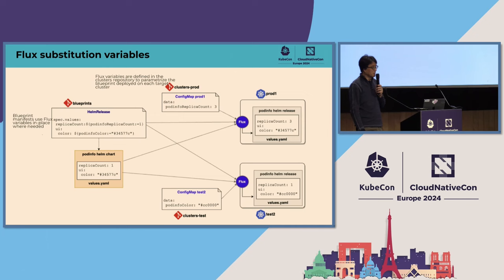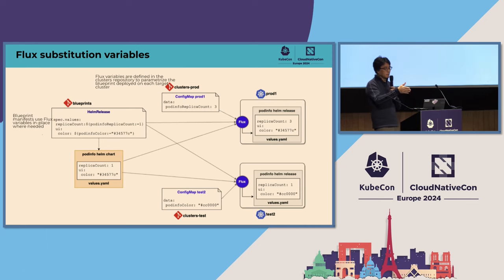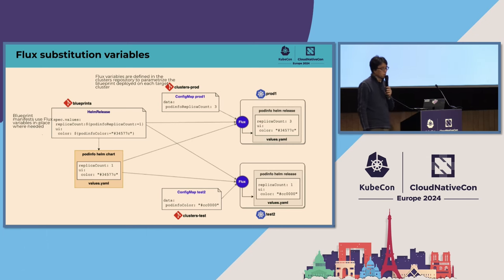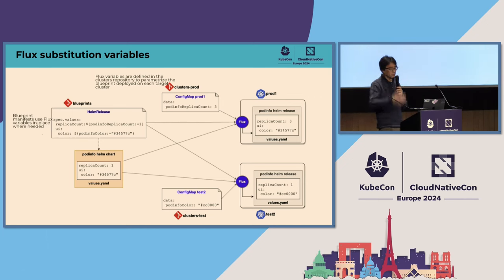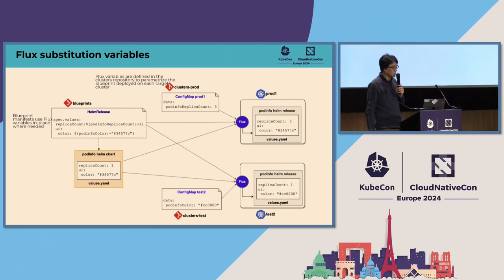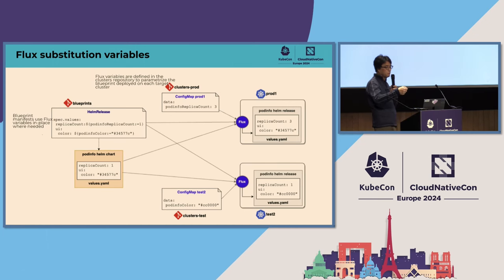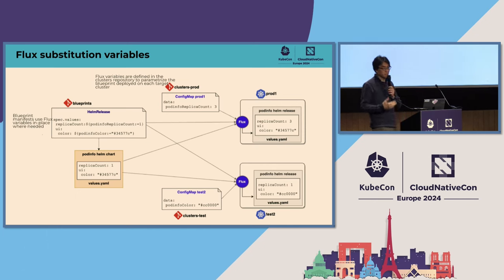On the clusters Git repo side, that's where you define the value to use for each cluster for each variable, and these come in the form of a config map. For a production cluster, for example, you want to override the number of replicas from default to three. In a test cluster, you might change the color attribute of the Helm chart. When you bootstrap Flux on these clusters, Flux picks up the Helm release and config maps, merges everything together, and forms the final set of values for that Helm chart.